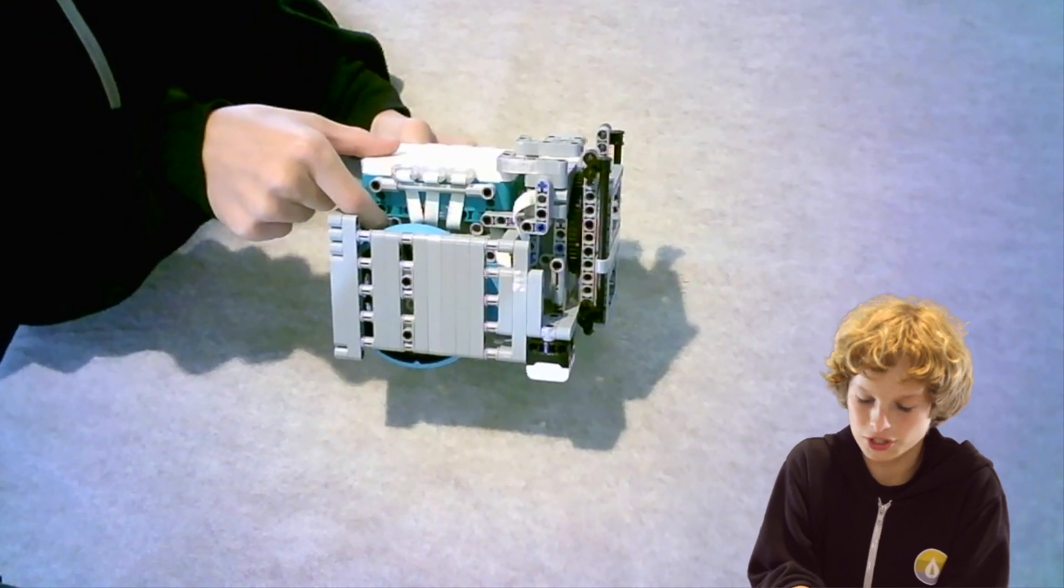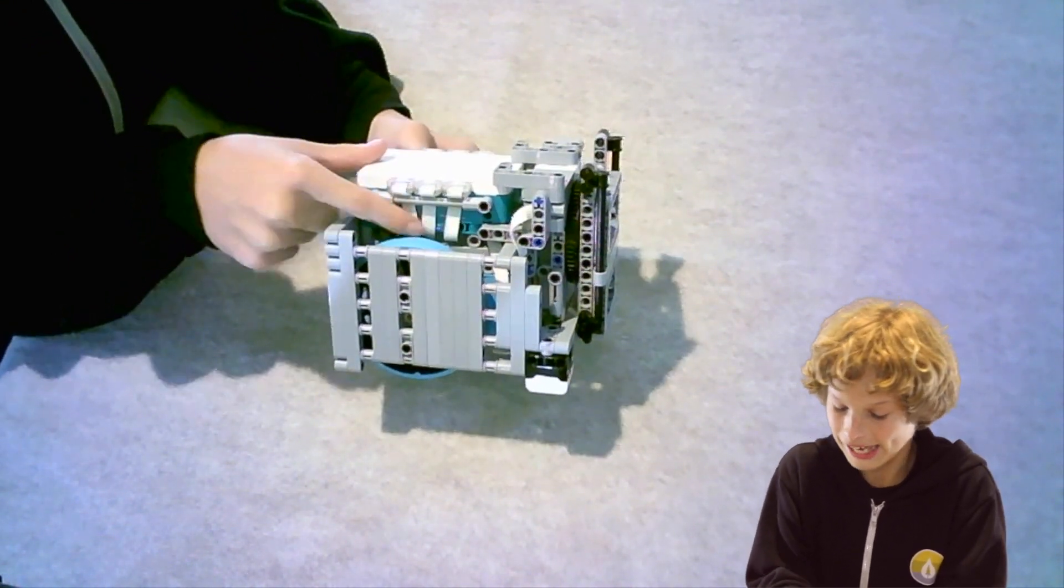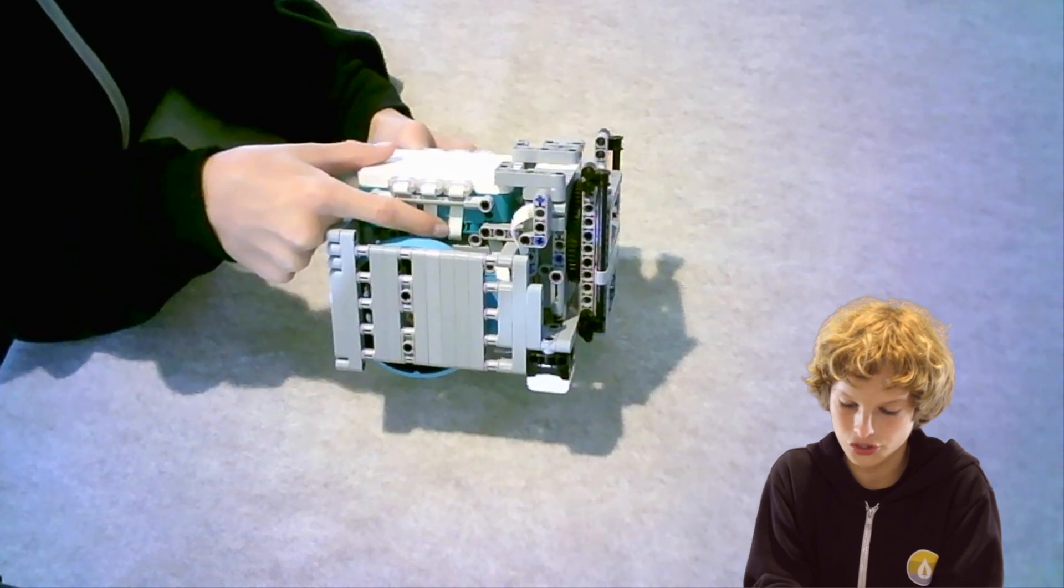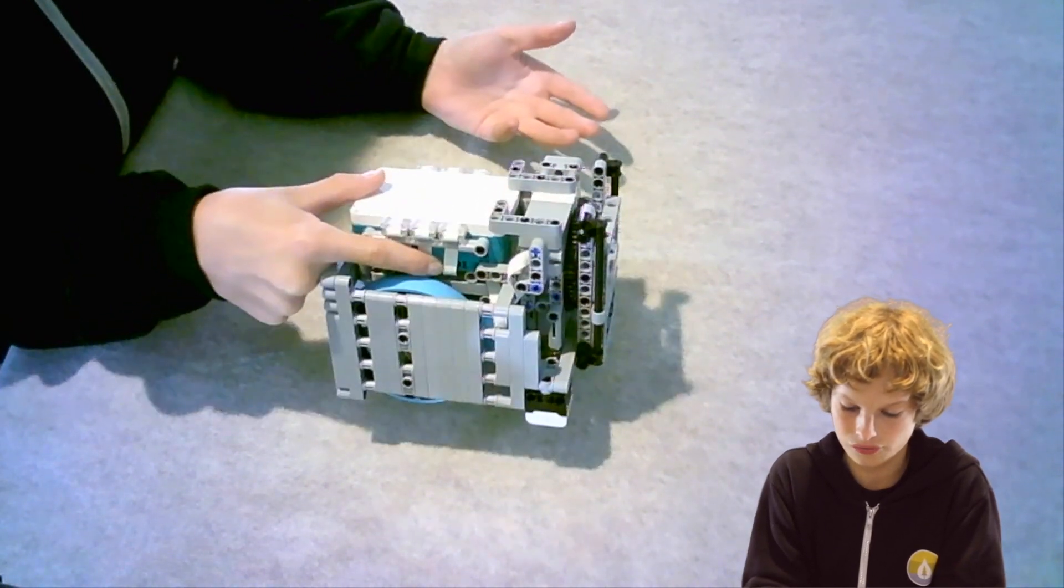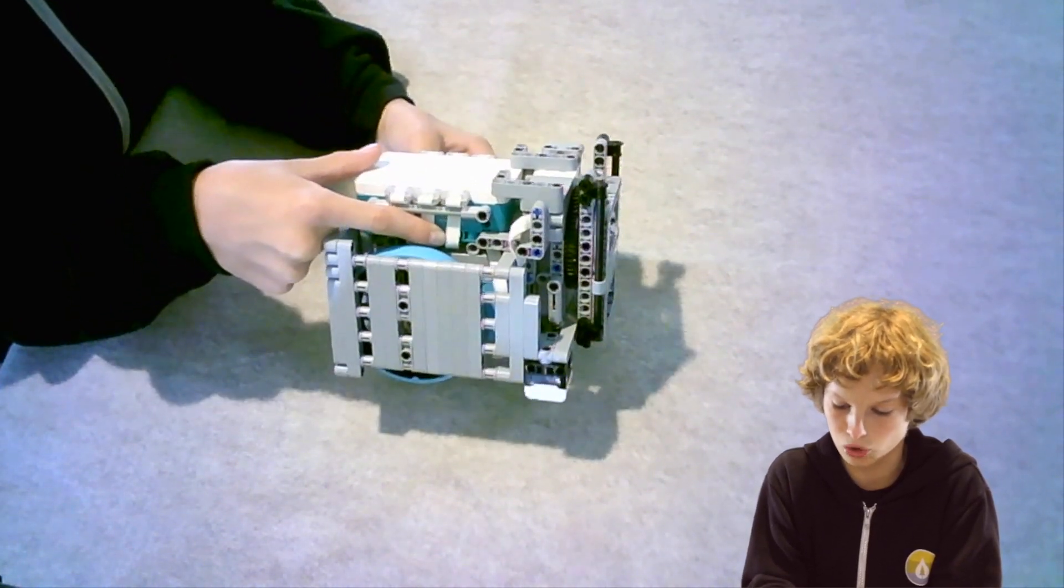Second, we put the cables, well the extra cables onto the hub just so that they don't affect any part of our robot.